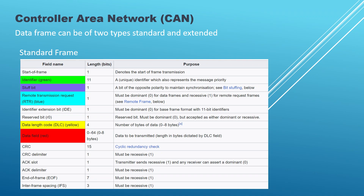The standard frame format consists of seven main components. First, Start of Frame, SOF: a dominant, low bit indicating the start of a frame. Second, Identifier, ID: this is the unique identifier used to distinguish between messages from different nodes in the network. The ID is 11 bits long. Third, Remote Transmission Request, RTR: a recessive, high bit that indicates whether the message is a data frame or a remote frame.